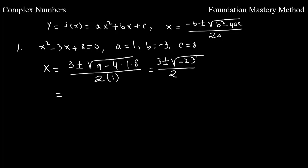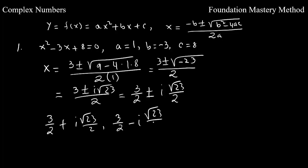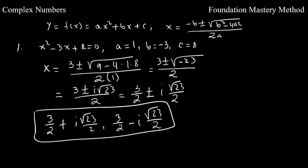Simplifying further, 9 minus 4 times 8 gives you negative 23, all over 2. As we saw in the previous video, this can be written in terms of i, so you get (3 ± i√23) / 2, which simplifies to 3/2 ± i√23/2. So the solutions are 3/2 + i√23/2 and 3/2 − i√23/2.